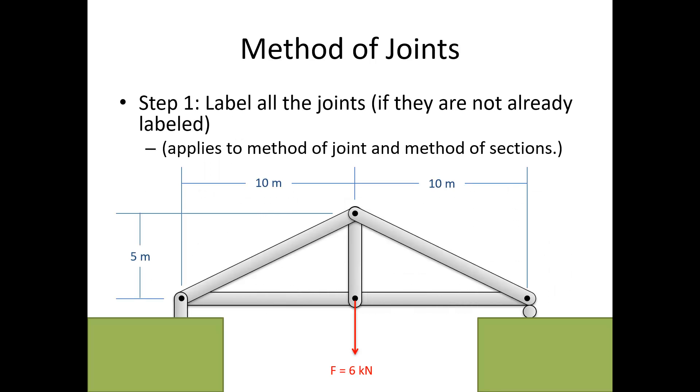So for the method of joints, this is the process we're going to follow. Number one, we want to label all the joints if they're not already labeled. Generally, we're going to use letters for this. So here I've got joint A, B, C, and D. And if I talk about the members, I talk about the two endpoints. So member AB, member BC, member AC, member BD, and member CD are the five members that are connected together at the four different joints in this case.